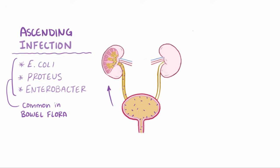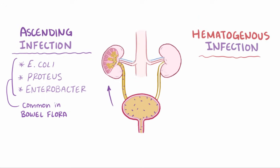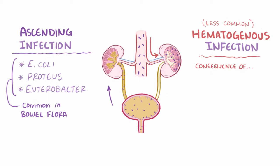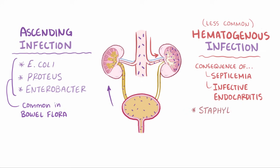It's also possible that the kidneys get infected via hematogenous infection, or spread through the bloodstream, although this is a lot less common. Usually pyelonephritis from hematogenous spread is a consequence of septicemia or bacteremia — bacteria in the blood — as well as infective endocarditis, an infection of the inner layer of the heart. In these situations, the most common organisms are Staphylococcus species and E. coli.